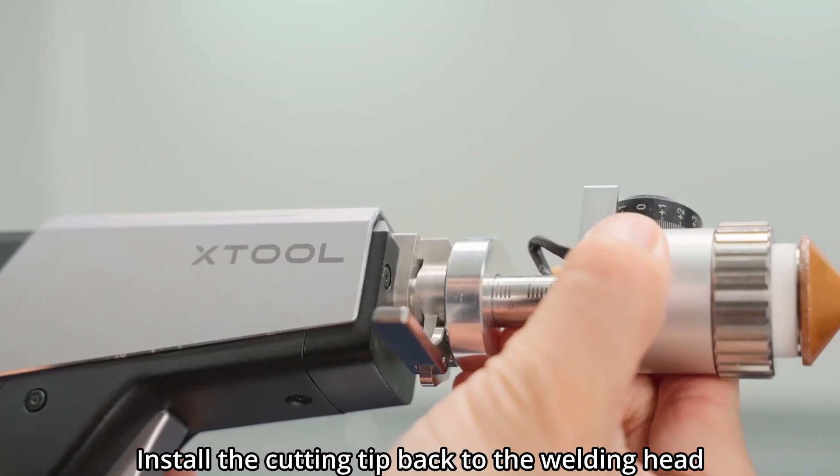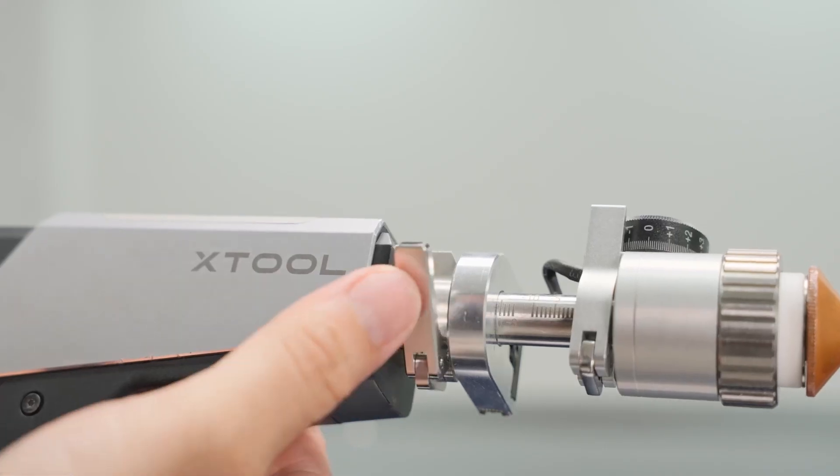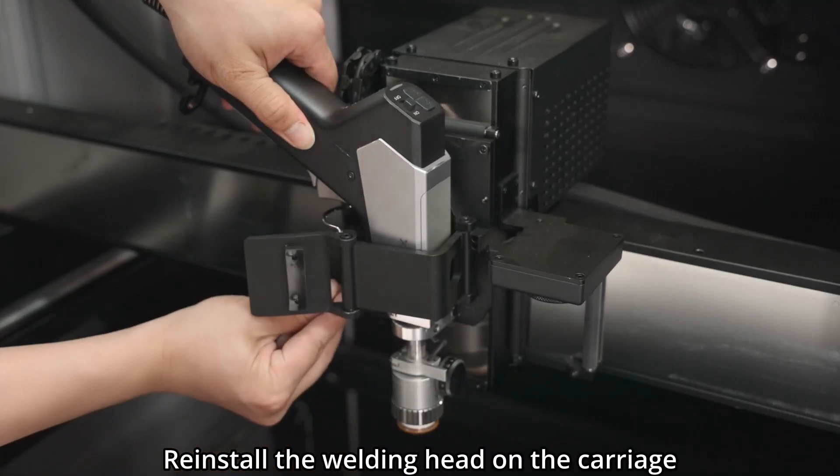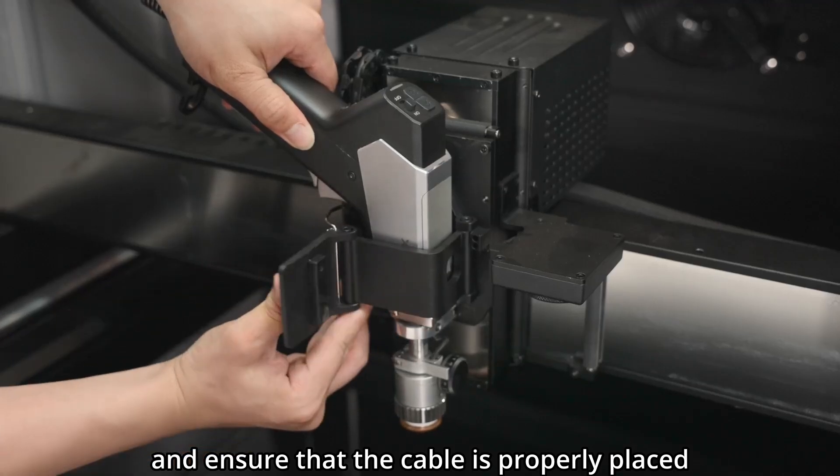Install the cutting tip back to the welding head, close the fastener. Reinstall the welding head on the carriage and ensure that the cable is properly placed.